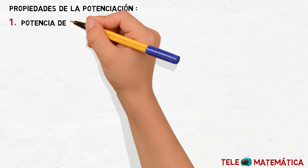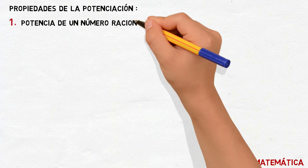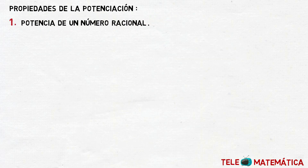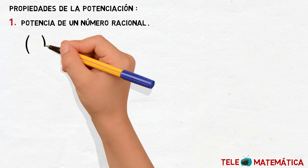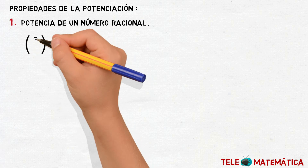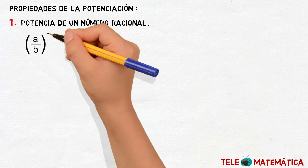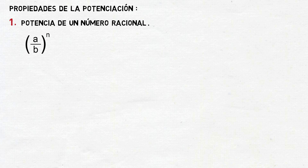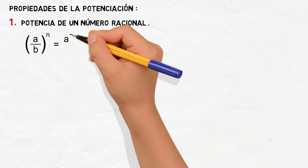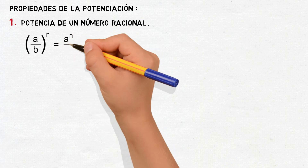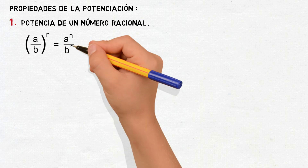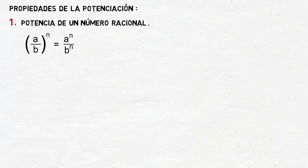Propiedad número 1. La potencia de un número racional, que se define como A dividido para B elevado a la N, va a ser igual al elemento A elevado a la N dividido para el elemento B elevado a la N.